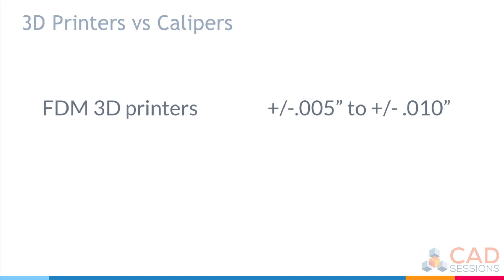So, our standard caliper can measure to 5 to 10 times more accuracy than your 3D printer can print to. So, it makes the caliper a great tool to use on your 3D printing journey.